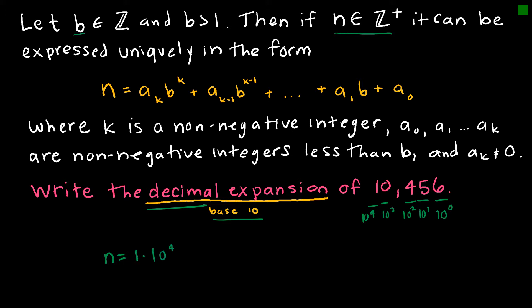So if I did a decimal expansion of this number — which is easy since it's already in base 10 — my decimal expansion would look like: 1 times 10 to the fourth, plus 0 times 10 to the third, plus 4 times 10 to the second, plus 5 times 10 to the first, plus 6. Note that we don't need to write 'times 10 to the zero' since that last term is always just multiplied by one. This would be my answer for the decimal expansion.